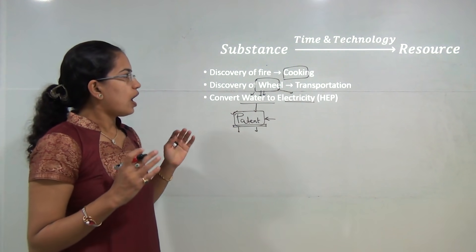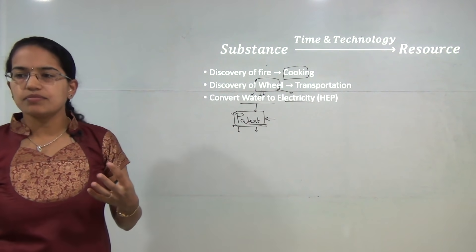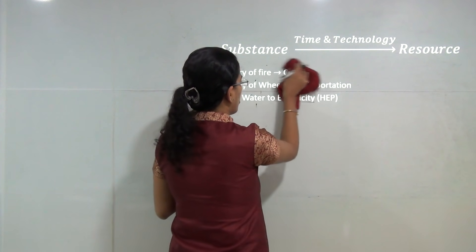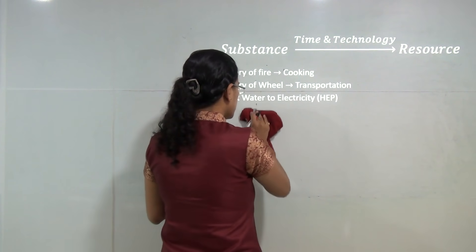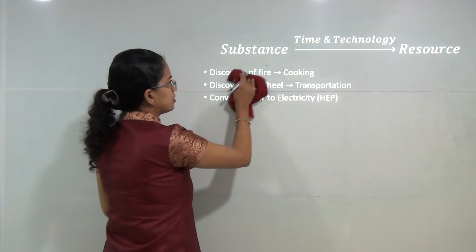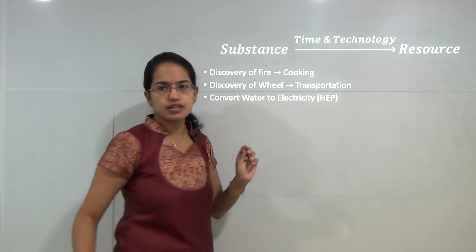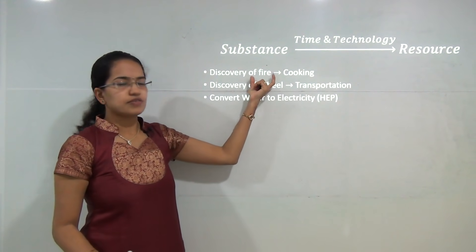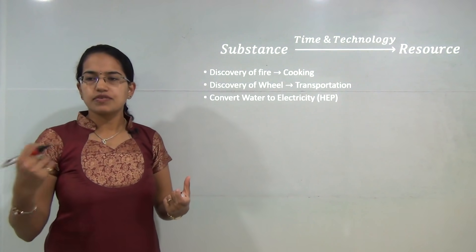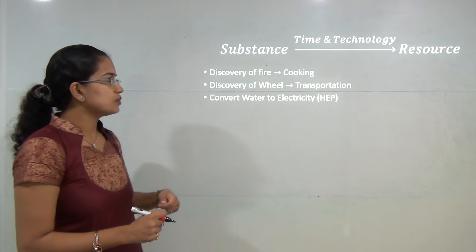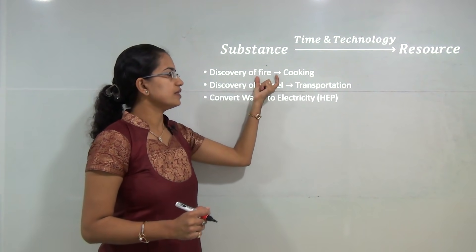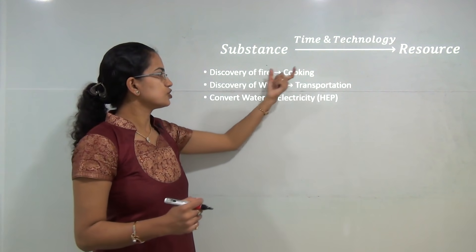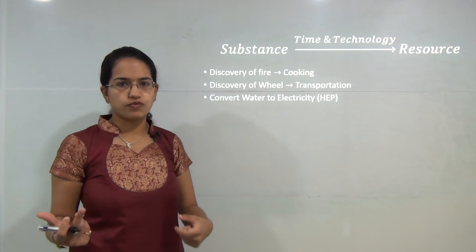How does a substance become a resource? With time and technology, a substance can become a resource. For example, the discovery of fire — initially no one knew the use for it. However, now it is used for cooking, burning, fossil fuel, and so on and so forth.